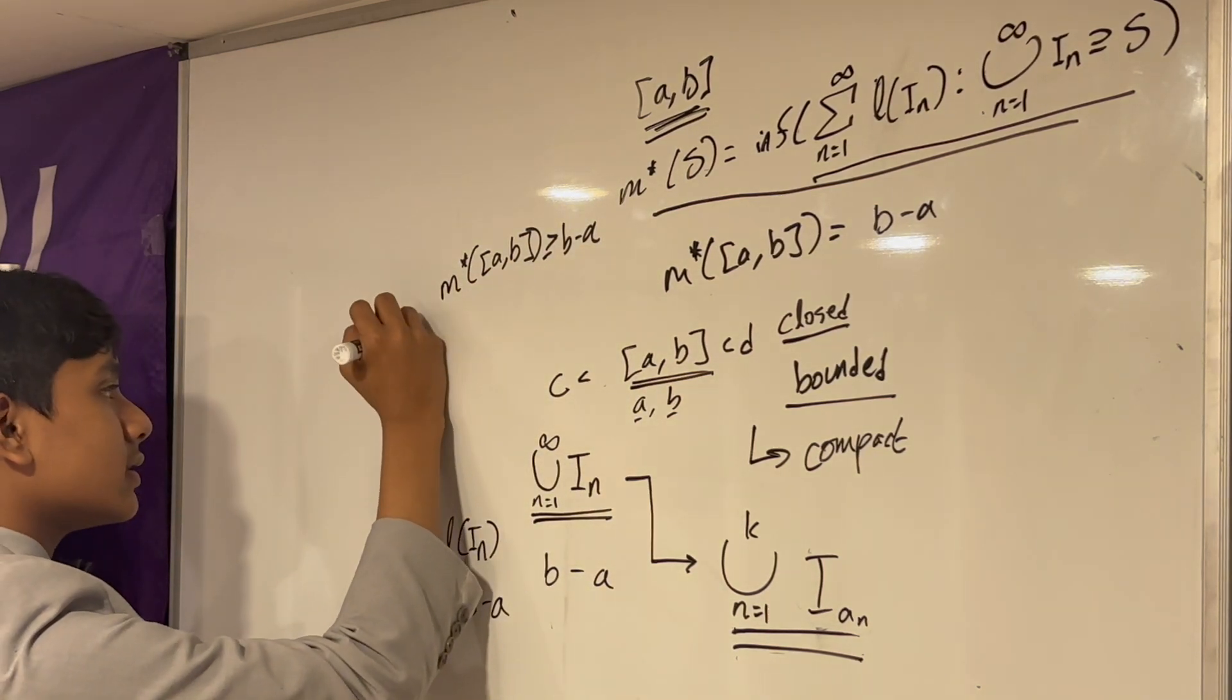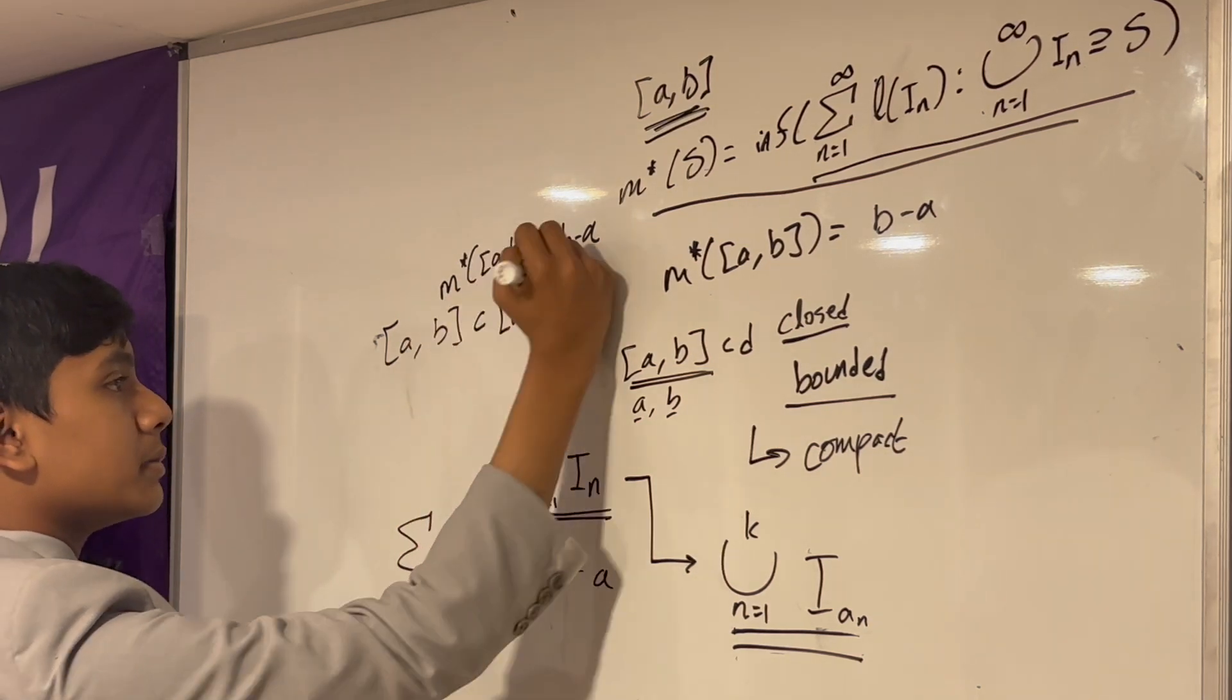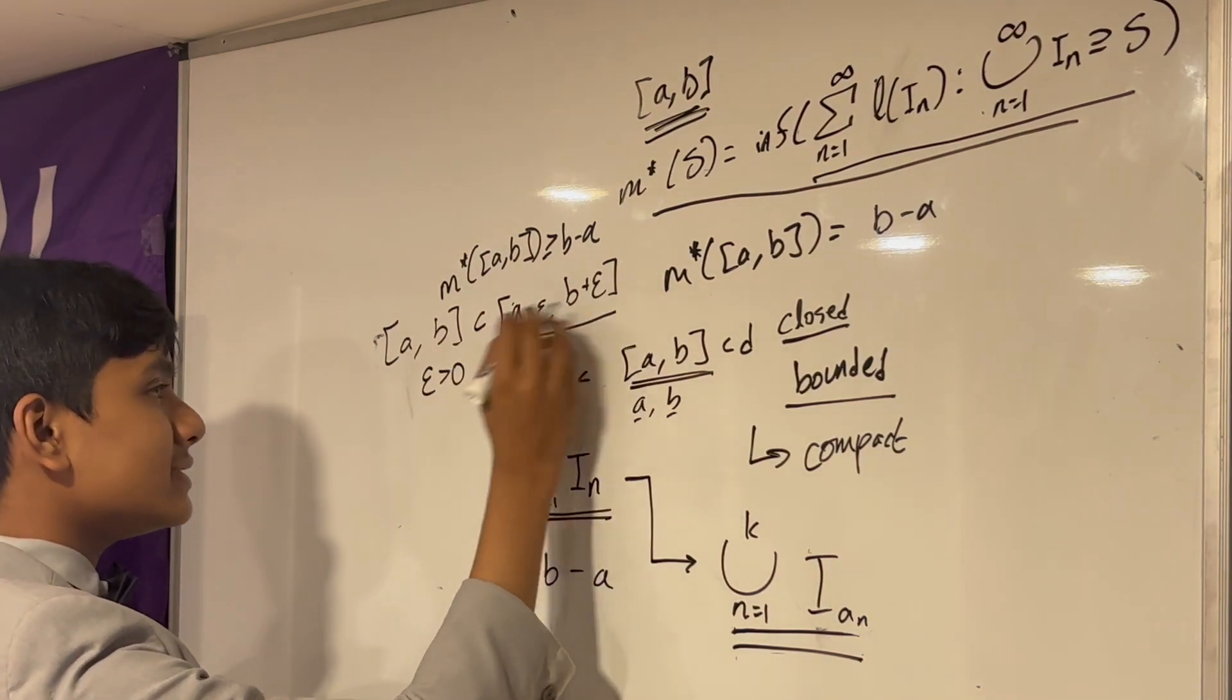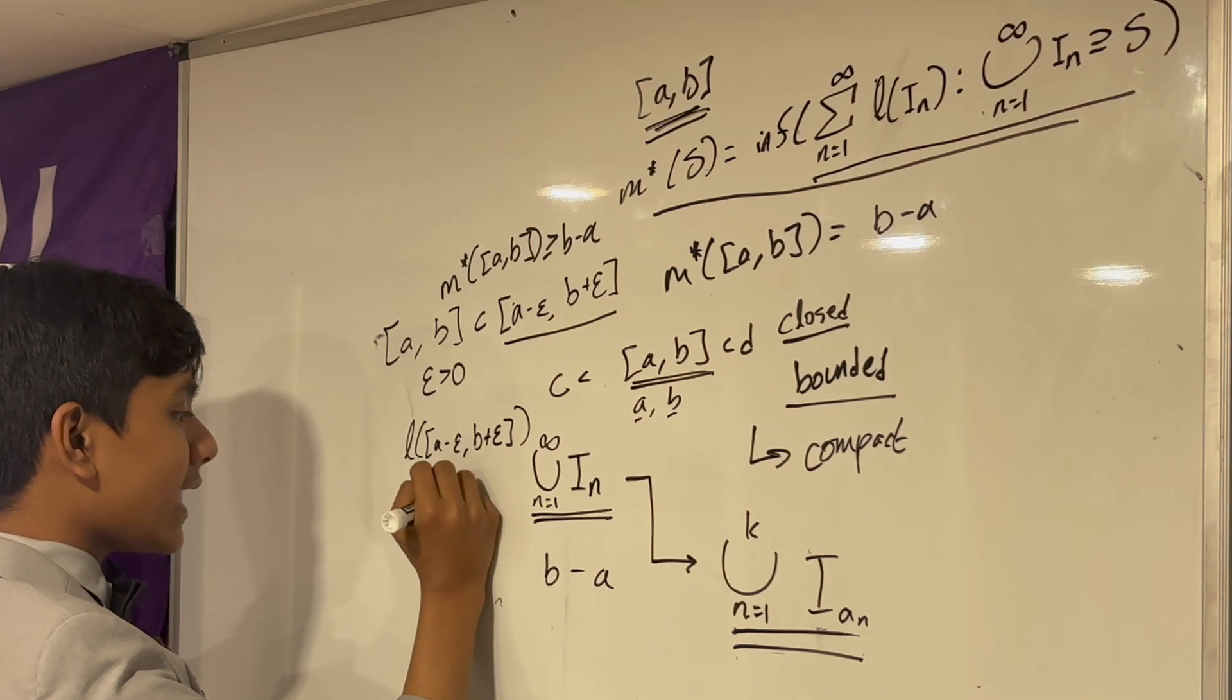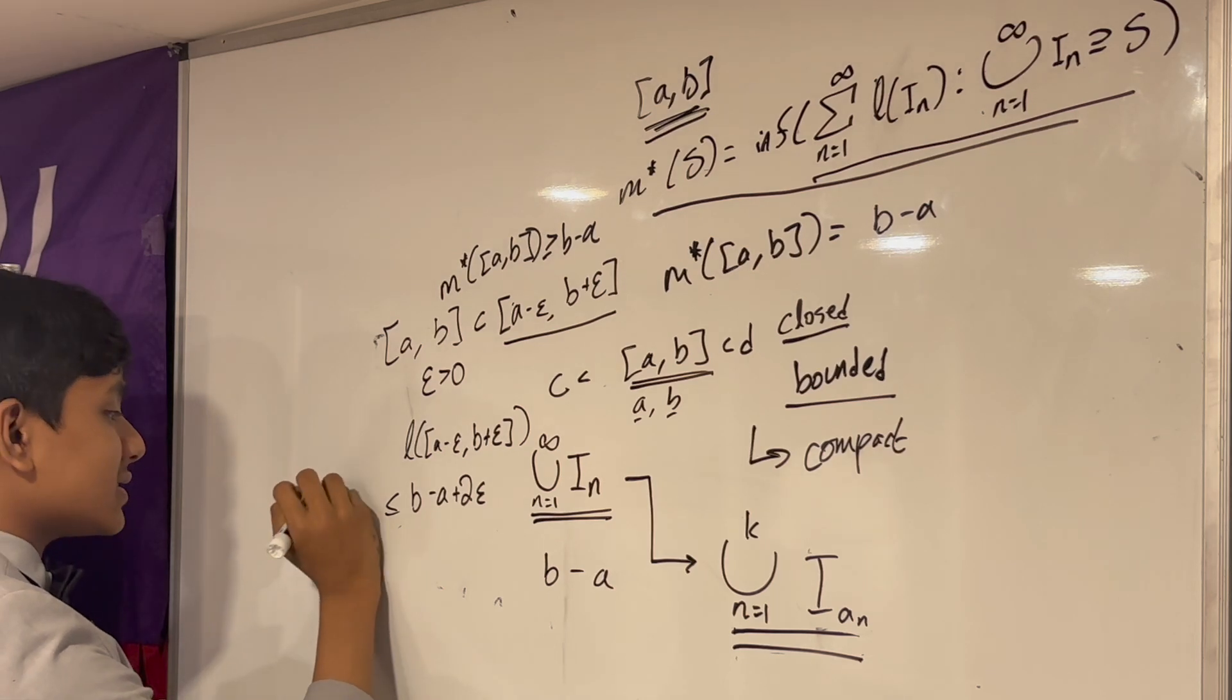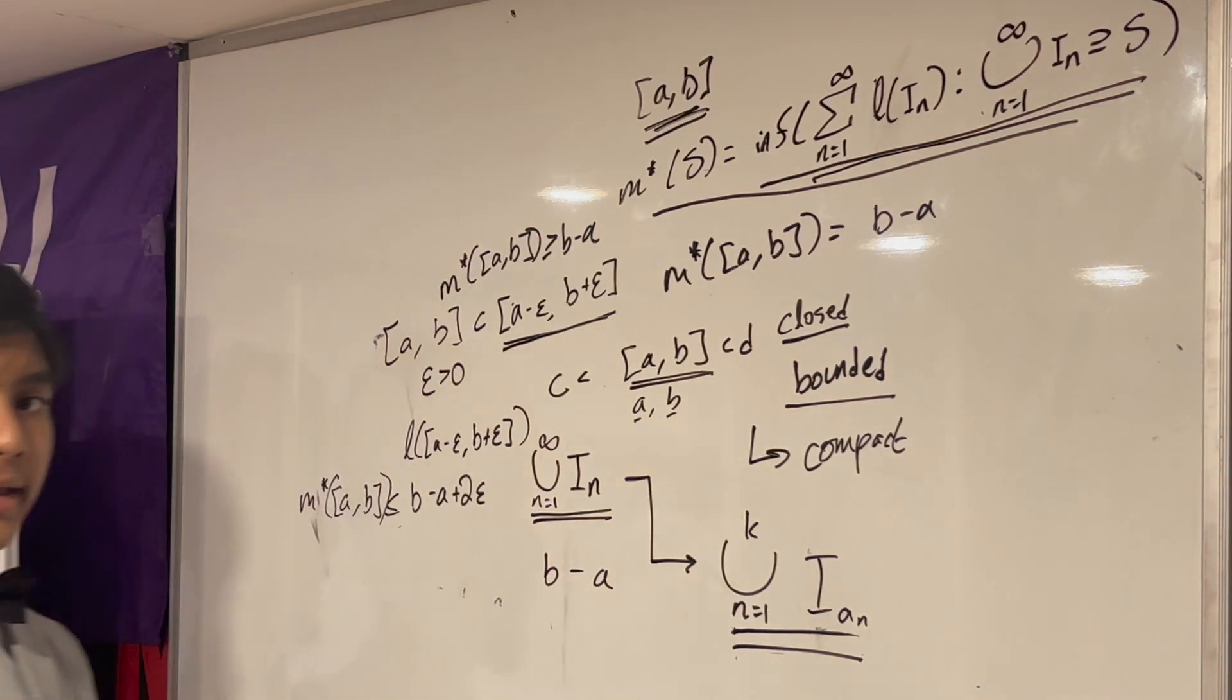But, we can also say that [A,B] is a subset of [A minus epsilon, B plus epsilon], given epsilon is greater than zero. So, notice that this has length B minus A plus 2 epsilon. But, we can make epsilon as small as we want, without any consequences. And, reminder, this is using the length of this in the context of plugging it into this infimum.